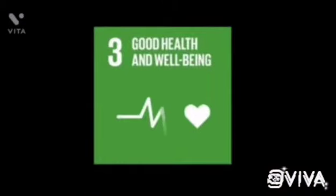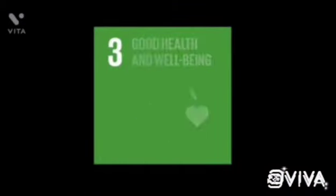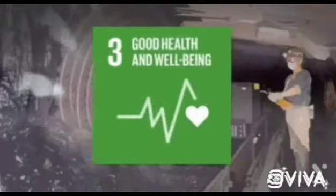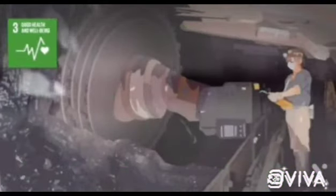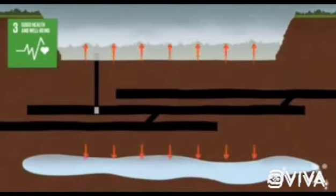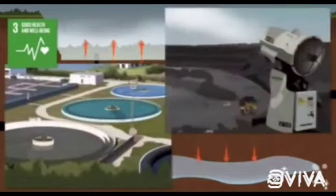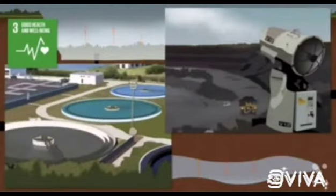SDG 3 aims to ensure healthy lives and promote well-being for all at all ages. Target 3.9 aims to reduce the number of deaths from soil pollution and contamination. Therefore, practices such as irresponsible mining, which results in all three types of contamination, must be counterbalanced by measures such as waste management and dust control.